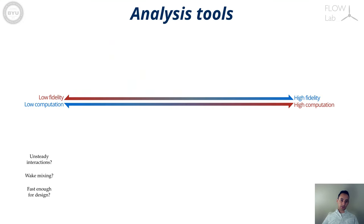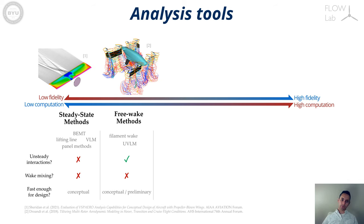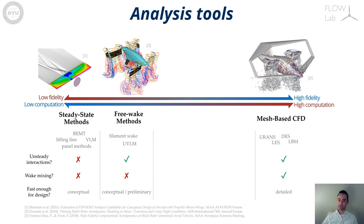On the low end of analysis tools that are used for design we have some steady state methods that are fast but that can predict only very simple interactions. Then we have freewake methods that can predict some unsteady dynamics but the requirement of preserving connectivity in the wake makes them numerically unstable for complex cases with strong wake mixing and turbulence. On the high end of the spectrum we have CFD tools that can predict all interactions but they are too expensive to be used for design exploration.